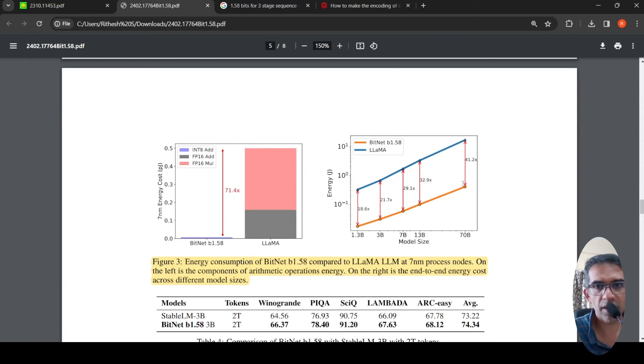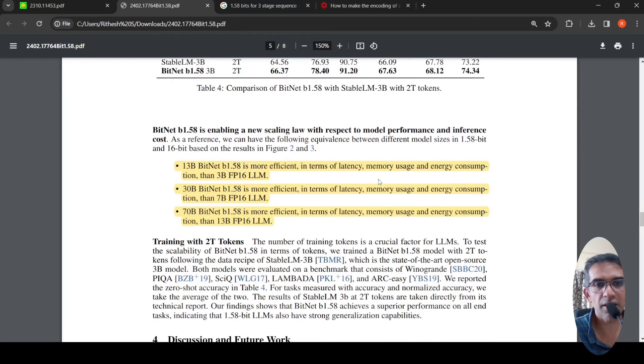So if you look at this particular graph, this is where they say from this, a 13 bit, your bit net architecture B1.58 is more energy efficient than a 3 billion parameter your LLM. Similarly, they say that a 30 billion parameter bit net. So more the number of parameters, you have, more better model generalization, more capacity in the model, for learning.